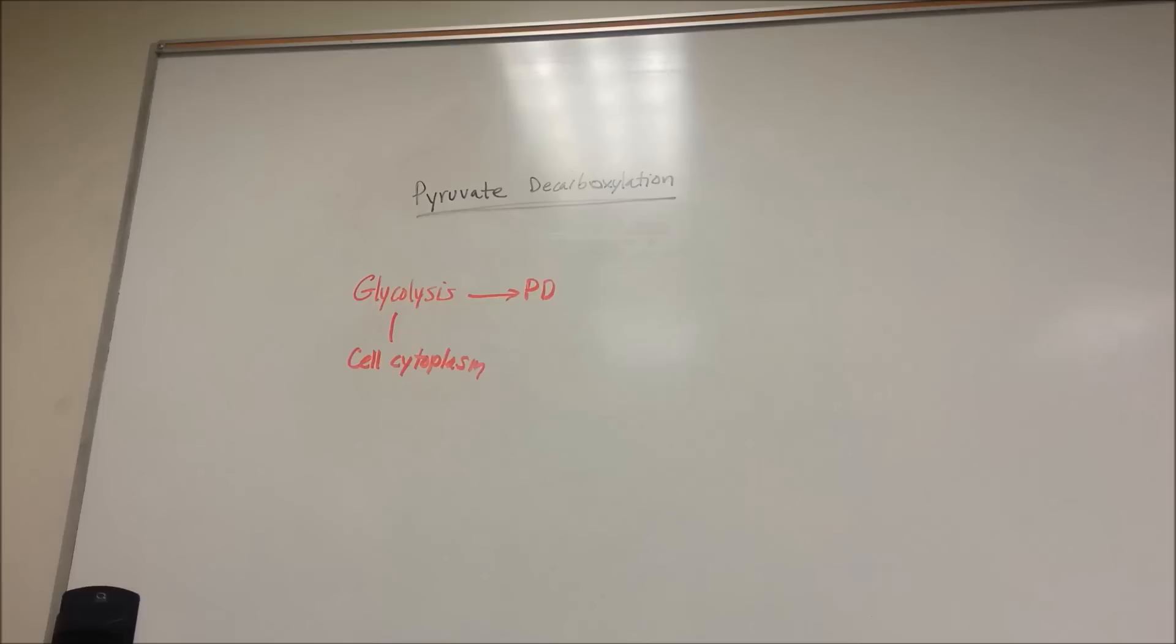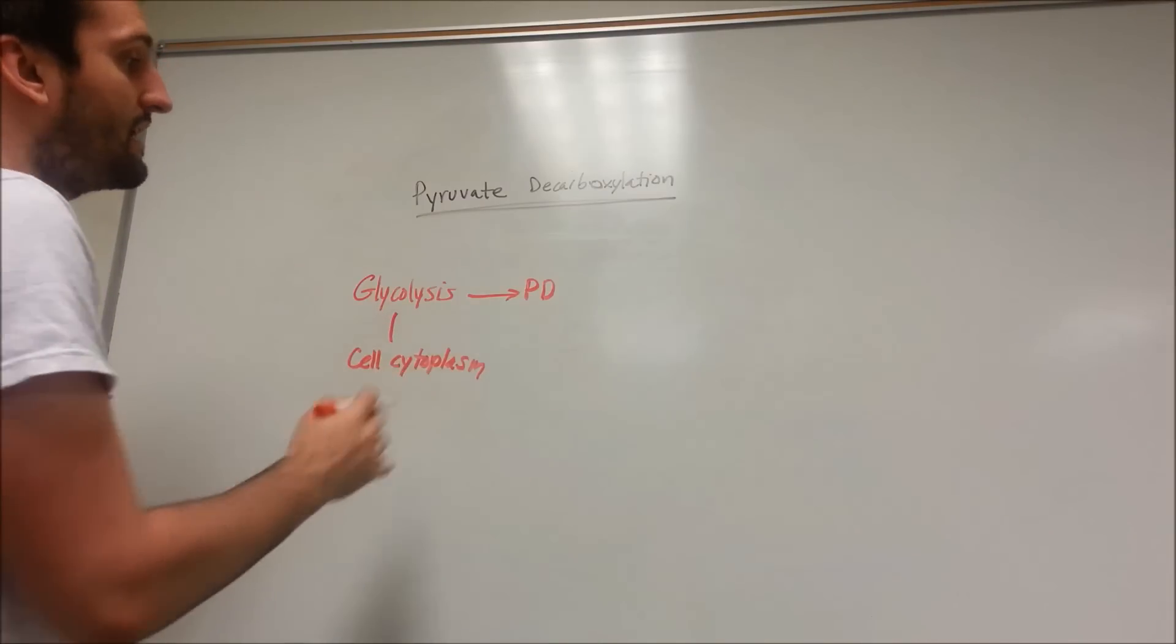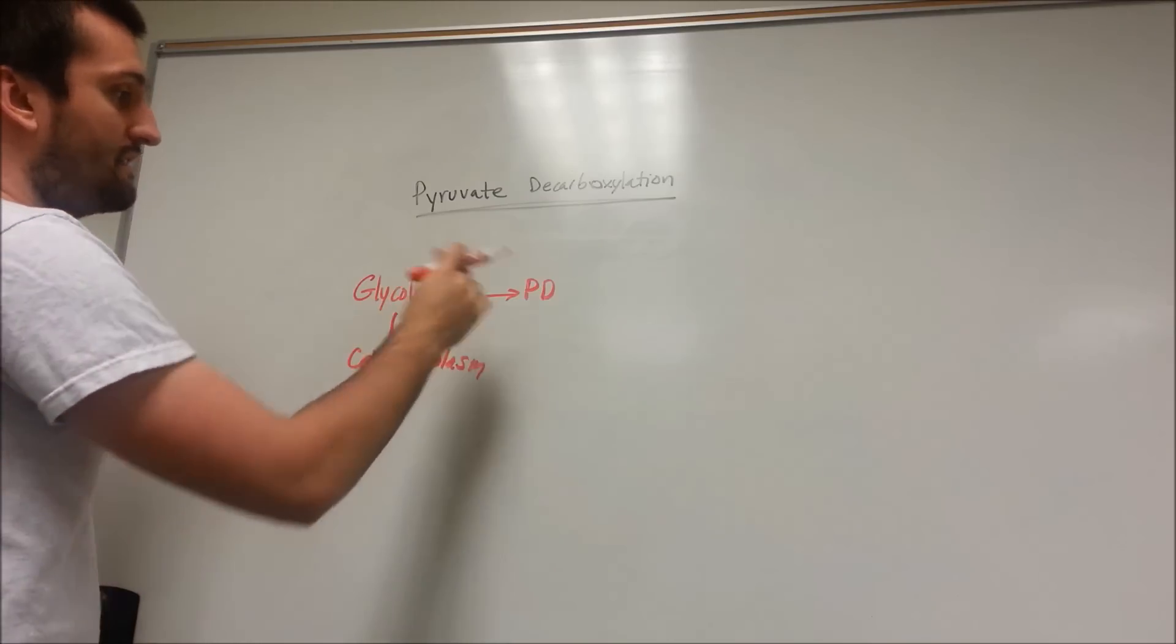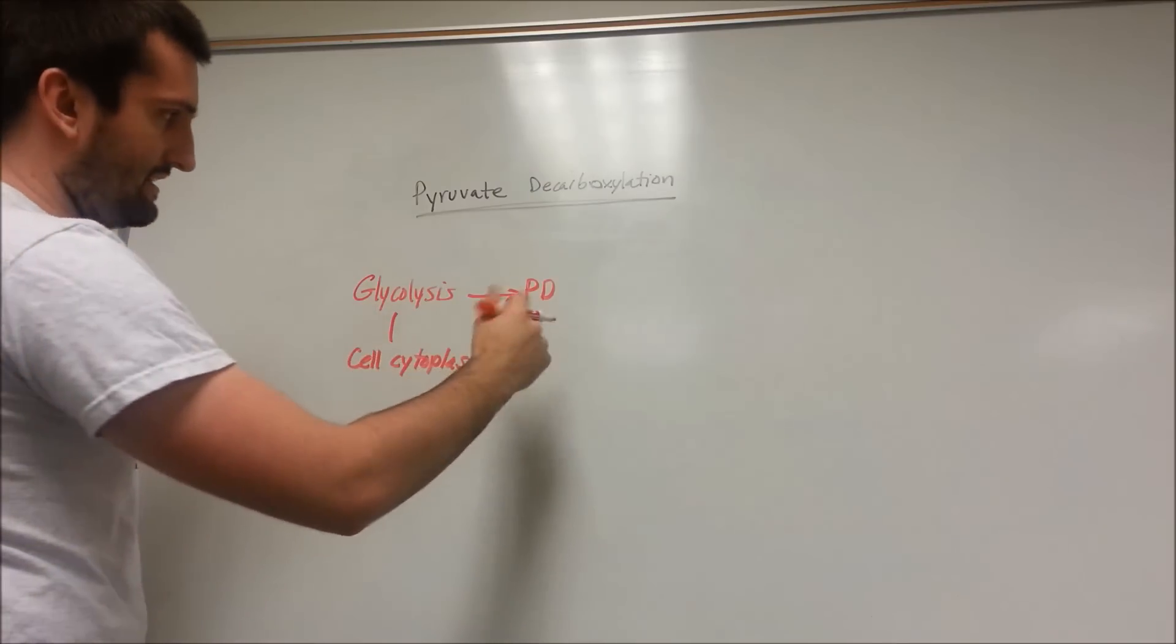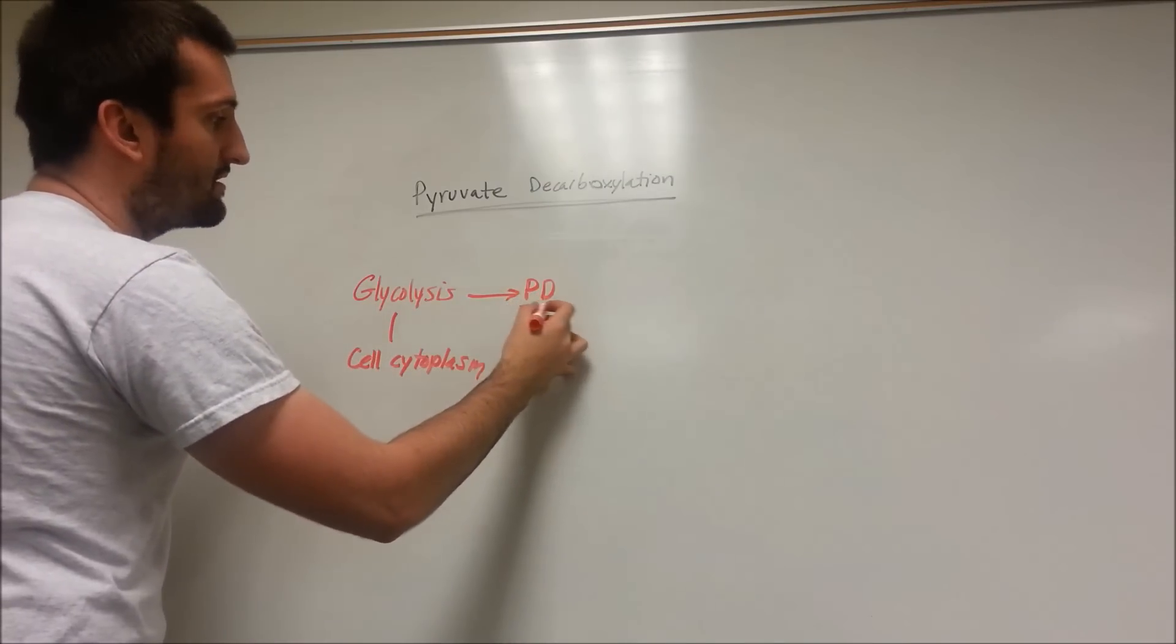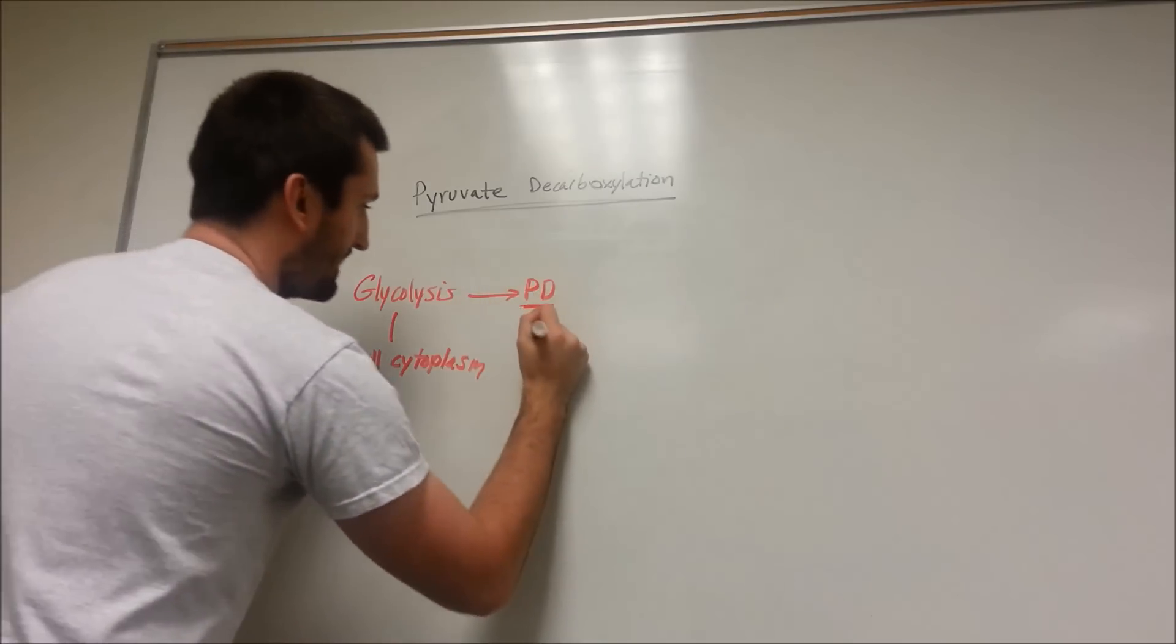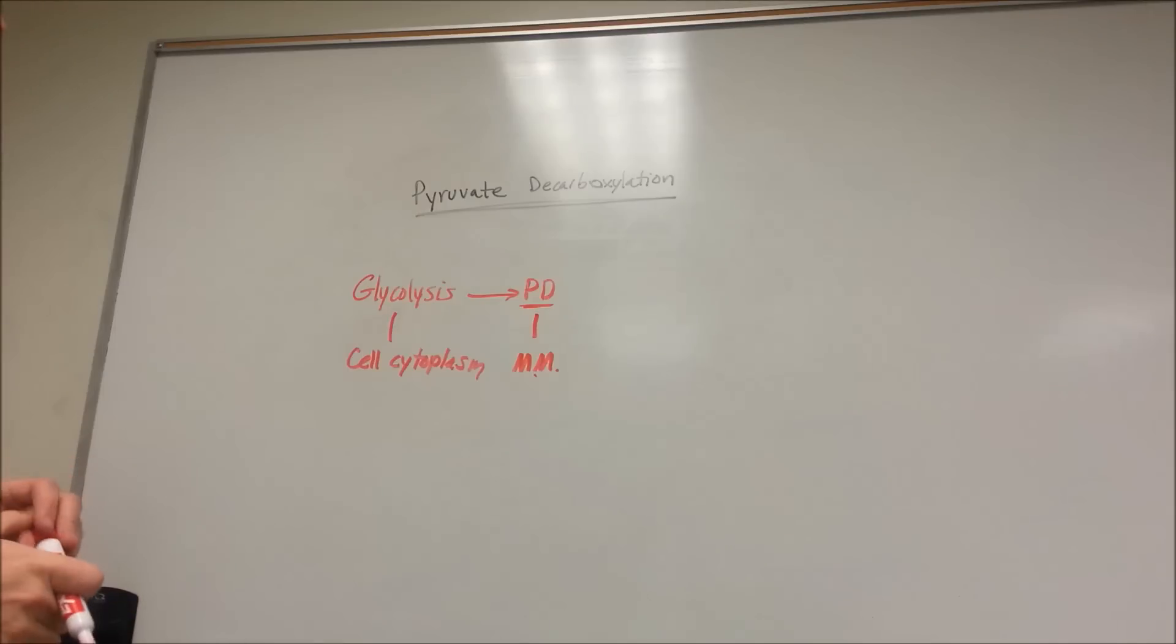The pyruvate decarboxylation reaction occurs in the mitochondrial matrix. We have a mitochondria, which is going to be an organelle in the cell. And we're going to enter into its matrix, so the inside of the mitochondria. It's going to be the very inside layer. And this is where pyruvate decarboxylation occurs. So I'm going to write MM for mitochondrial matrix.